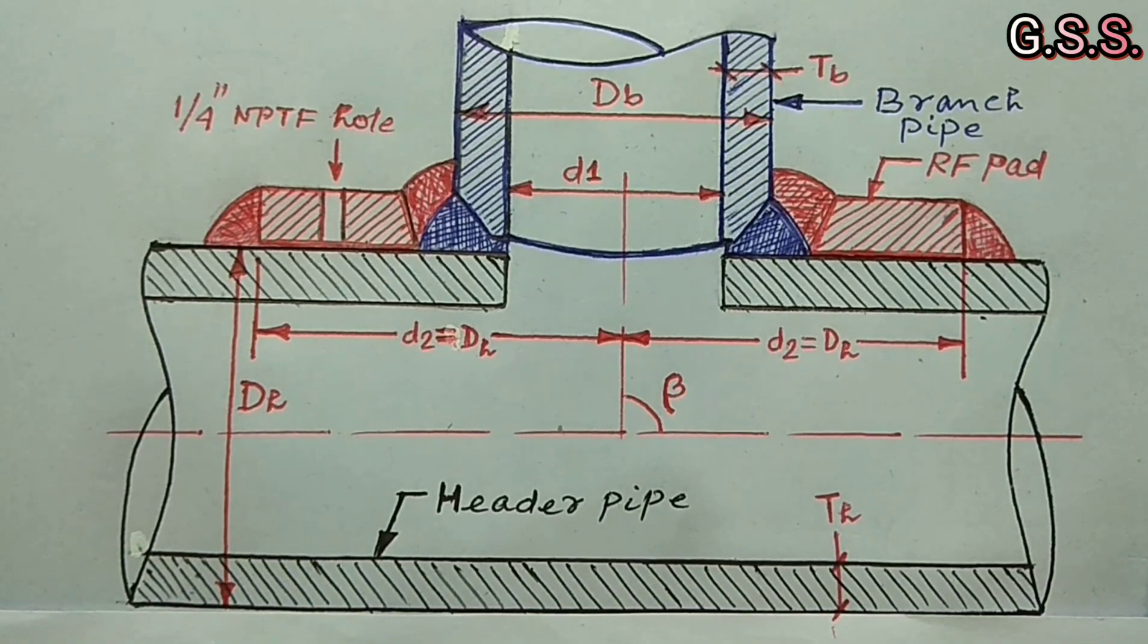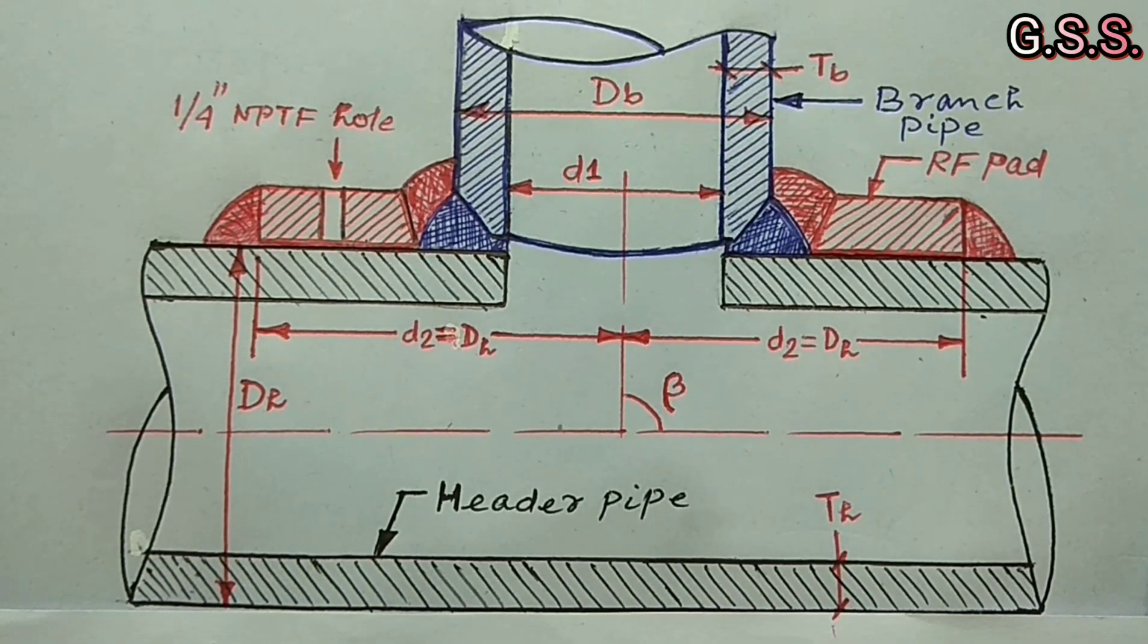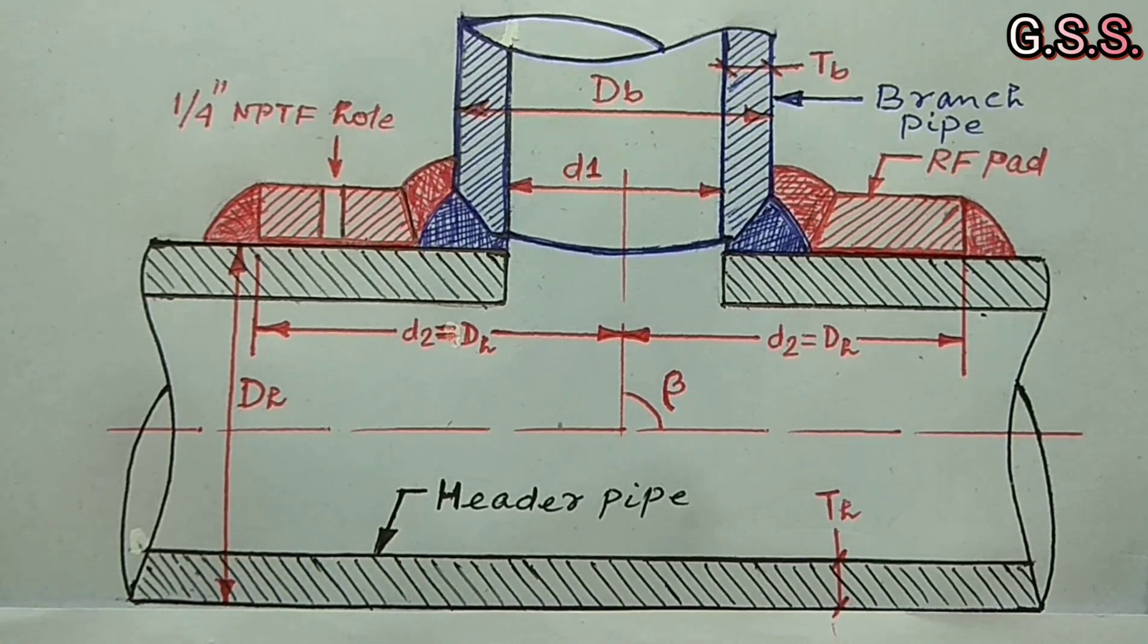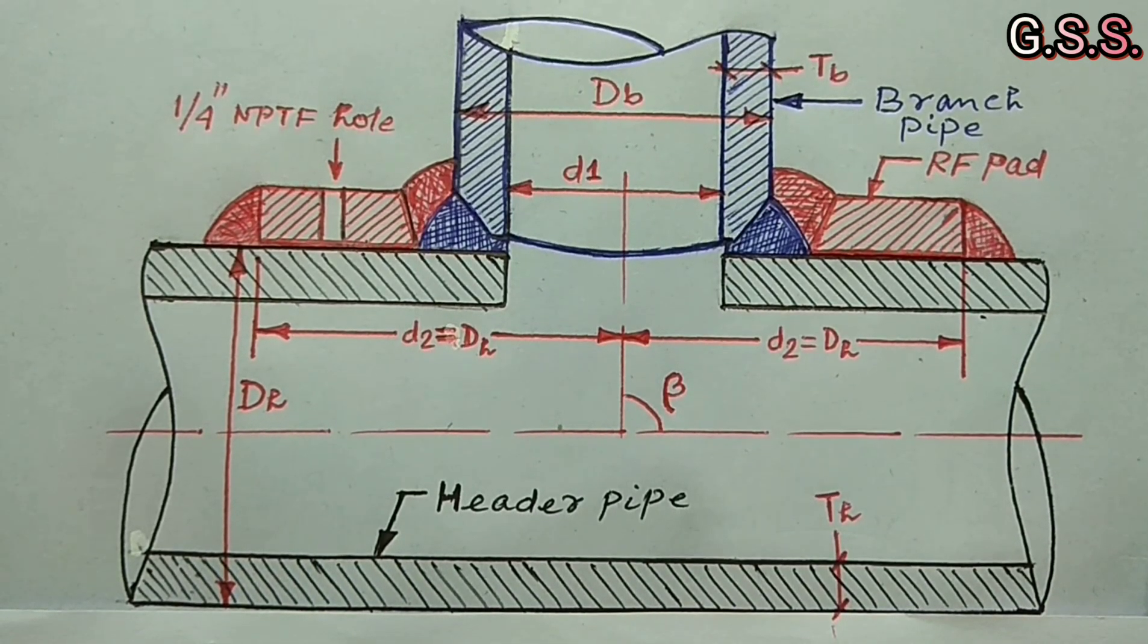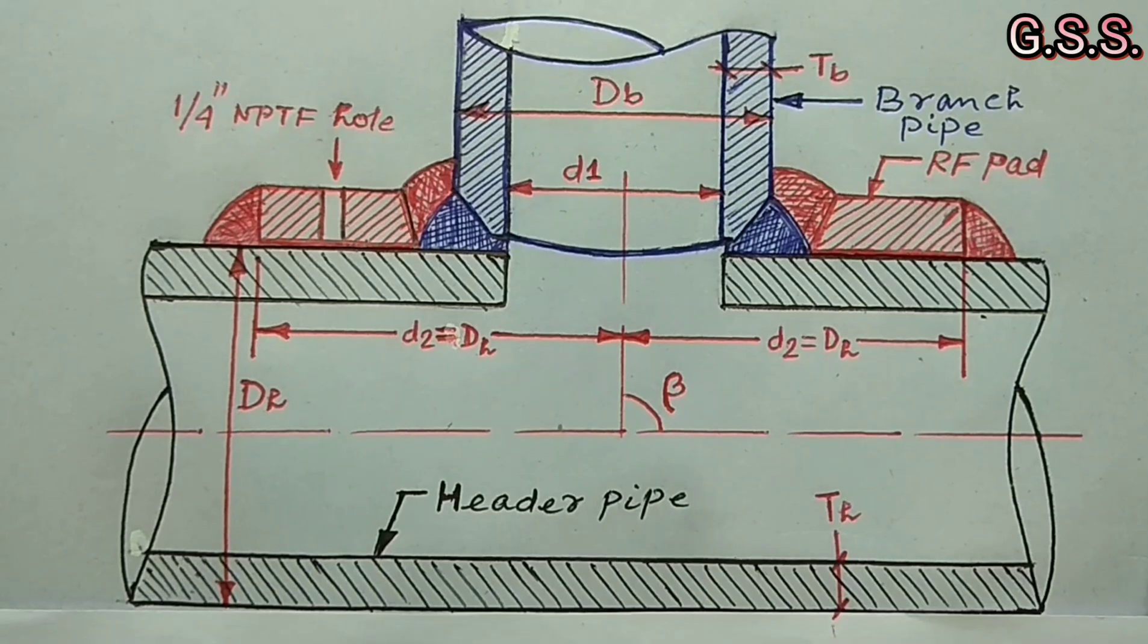Also, this width hole is used for testing leakage through the RF pad using air or soap. Once the welding and testing is completed for RF pad, the small width hole is sealed using a plug.